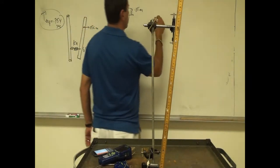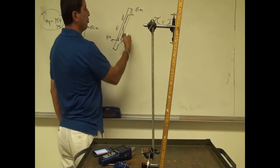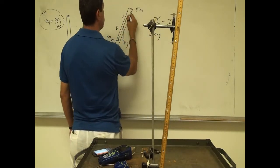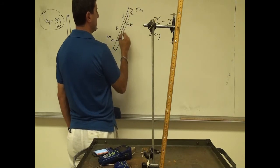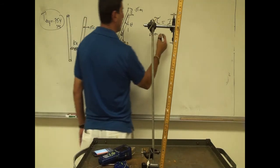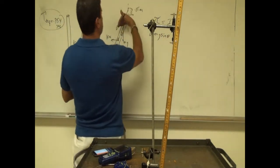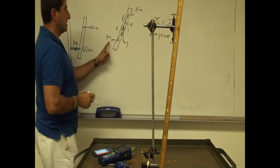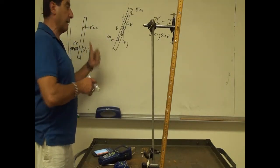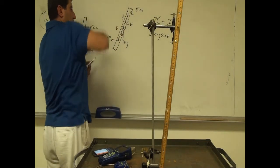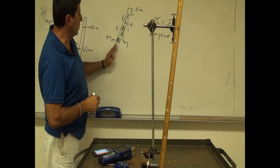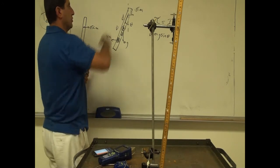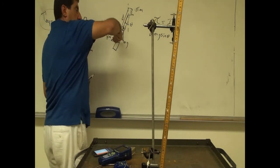We apply torque equals moment of inertia times alpha. The torque due to weight equals little d times mg times sine of the angle theta — that's out of the board. The kx torque is big D times kx, and it's in the opposite direction, into the board. So the weight makes the system go one way and the spring pushes it back.